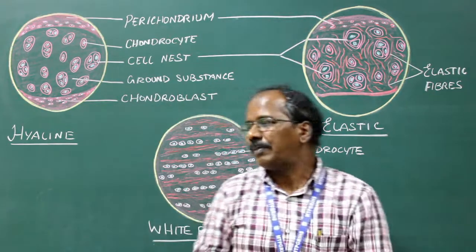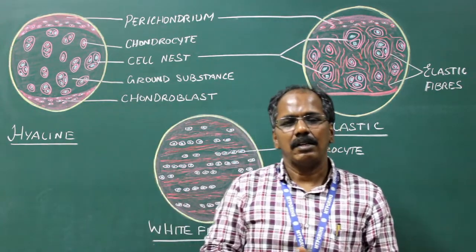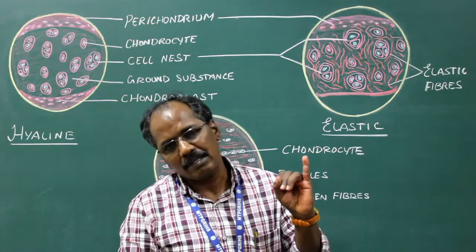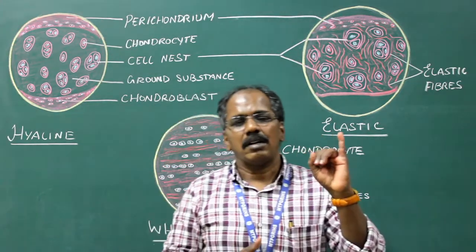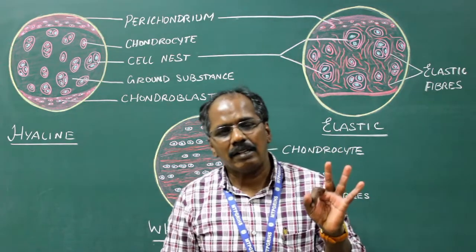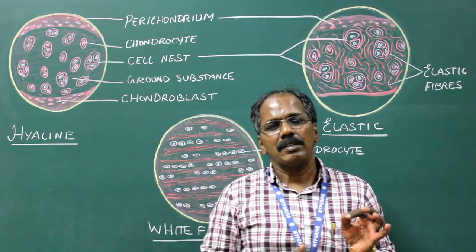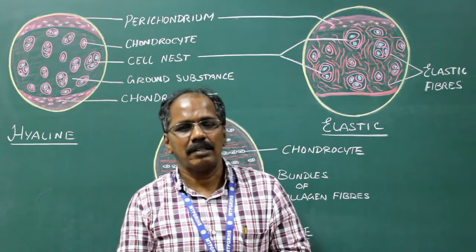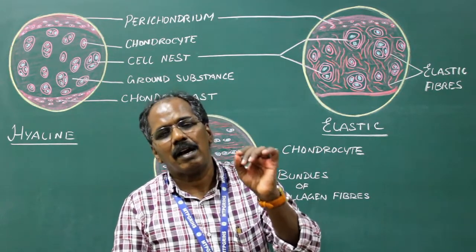Examples for hyaline cartilage: ala of nose, costal cartilage, thyroid cartilage, cricoid cartilage, arytenoid cartilage, and articular cartilage.